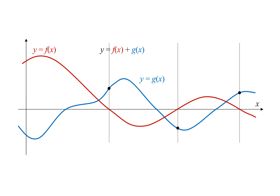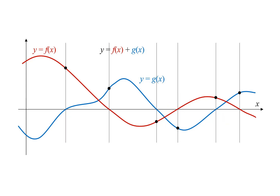Similarly, we can find values of x where g of x is zero. At these points, adding g of x to f of x means adding zero to f of x, so we just get f of x at each one of those values of x.